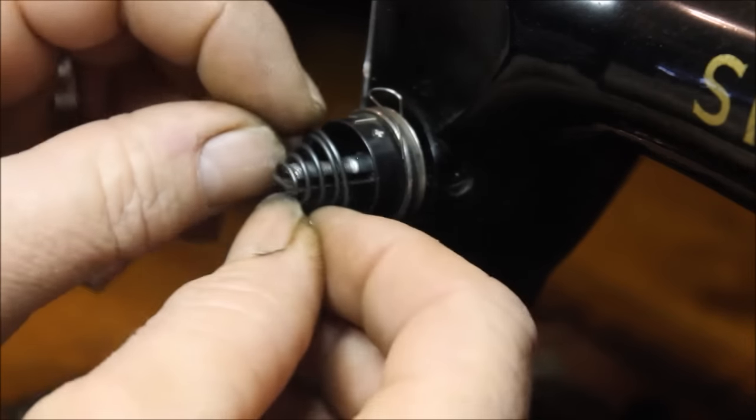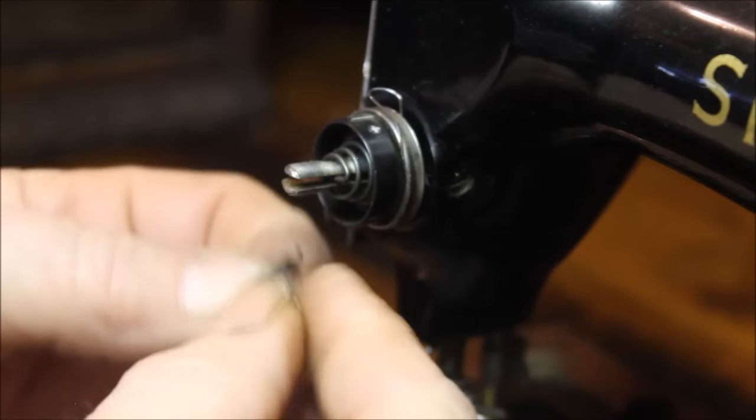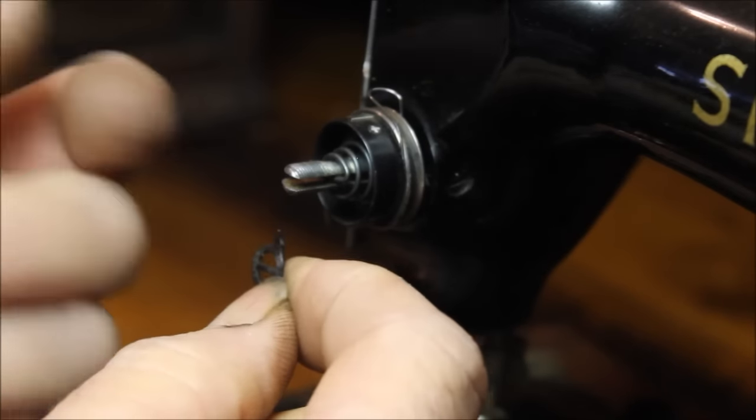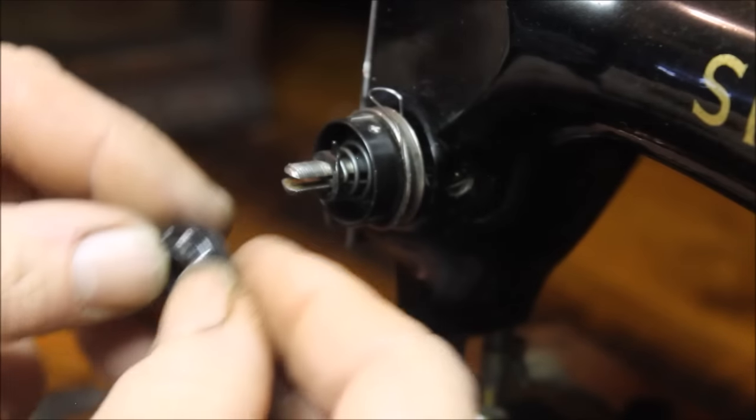The spring goes in the little slot - of course that's the only way it will go on there. This little doohickey with the hook on it hooks back towards you, away from the machine. The dial goes back on.